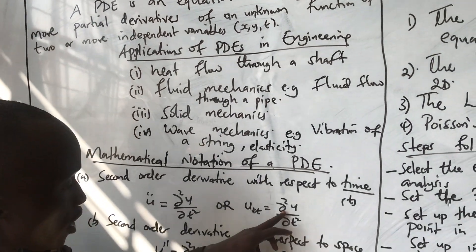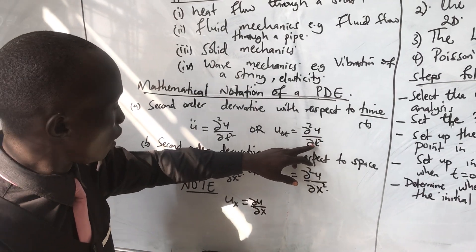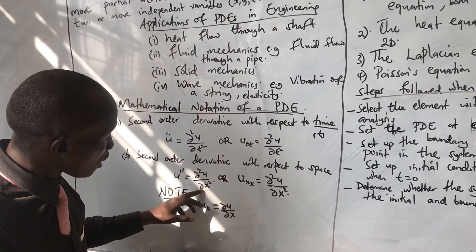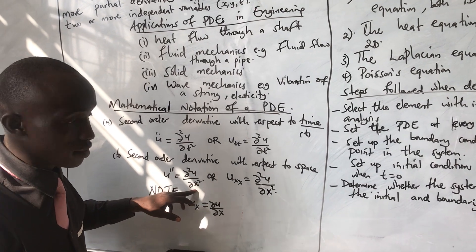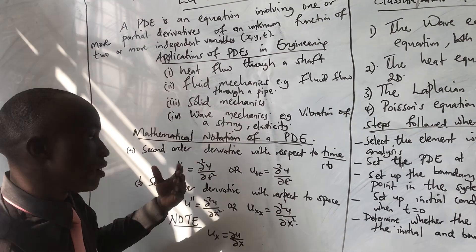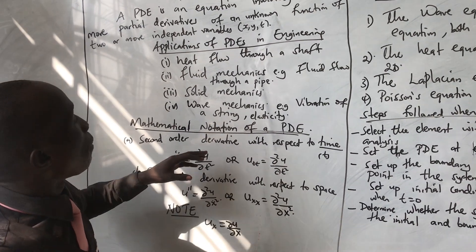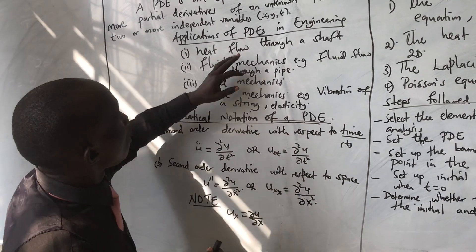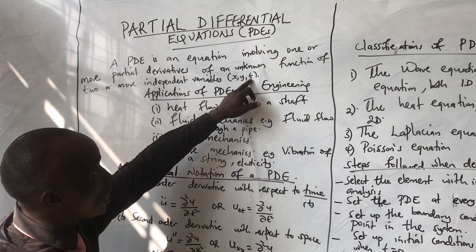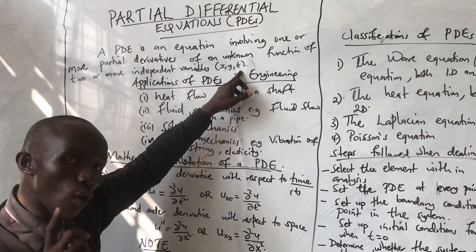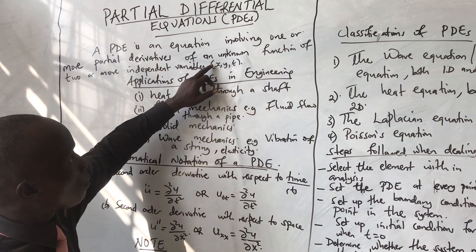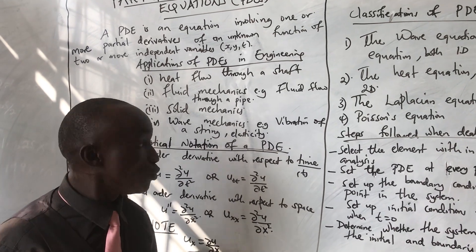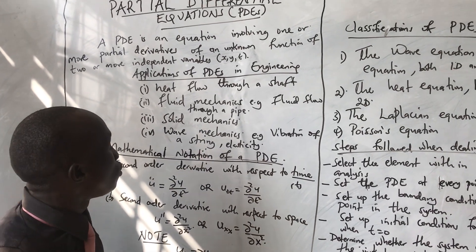This is a partial derivative of u with respect to t, and this is a partial derivative of u with respect to x. The variables can be x, y, and t. When it is in terms of x and t alone, it is a one-dimensional equation. When it is in terms of x, y, and t, it is two-dimensional.